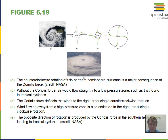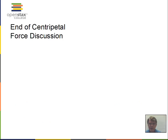For high-pressure systems it's the opposite: air leaving the high pressure and heading towards the equator is not traveling as fast as the surface there, since v = rω is larger near the equator. So it lags behind, producing clockwise circulation. This difference in speed — v being higher near the equator and lower near the poles — drives circulation in high and low pressure systems. Remember: centrifugal force is not a real force, it's a point-of-view observation.